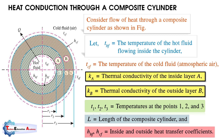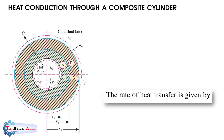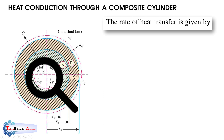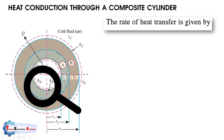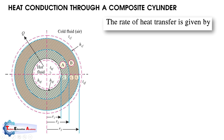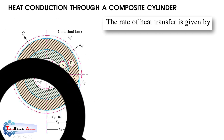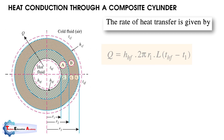Both convection and conduction will take place in the inner and outer cylinder. In the inner cylinder, hot fluid transfers heat to the inner surface of the pipe by convection. In layers A and B, conduction takes place. Between the outer surface of layer B and the surrounding atmospheric air, convection takes place again. So the rate of heat transfer is given accordingly.